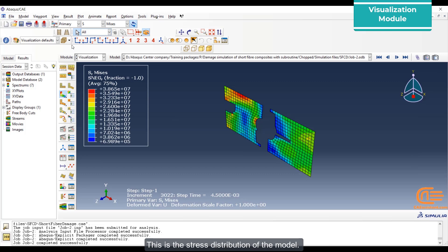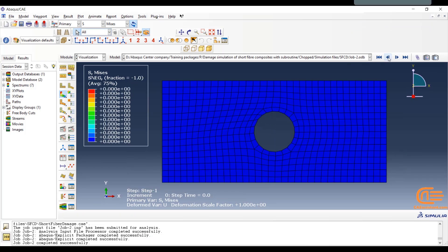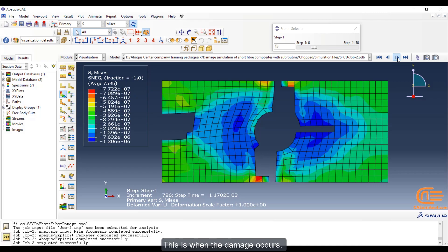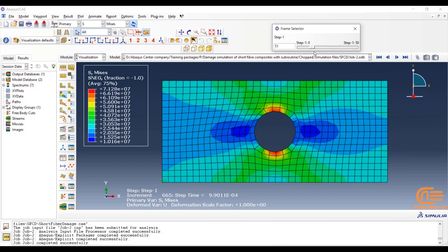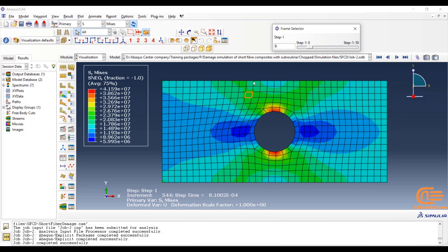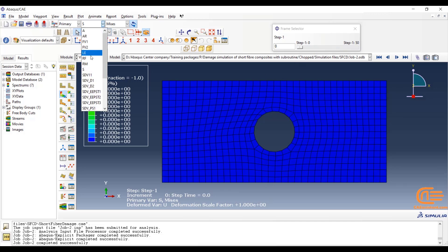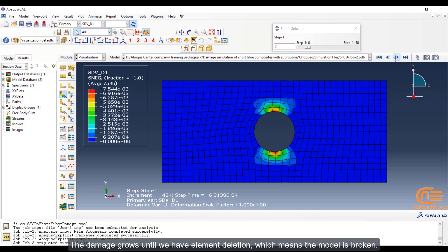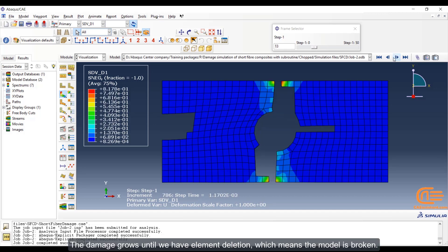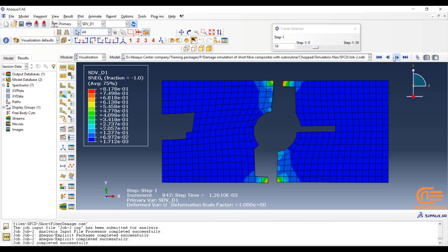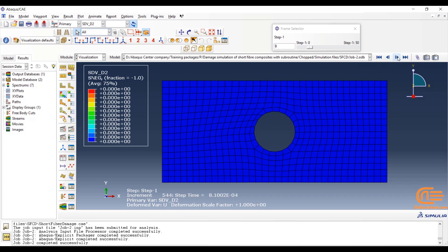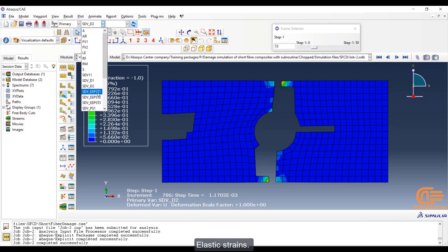This is the stress distribution of the model. This is when the damage occurs. Let's see the state variables. First, the damage variables. This is the damage variable in direction 1. There are no damages until this time. The damage grows until we have element deletion, which means the model is broken. This is the damage variable in direction 2.